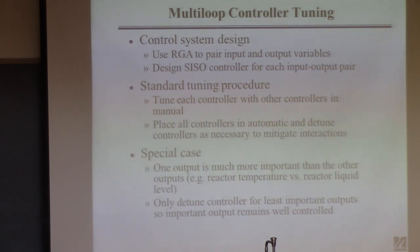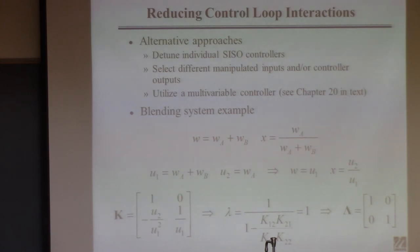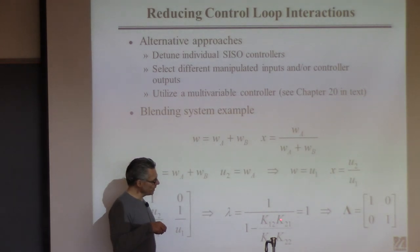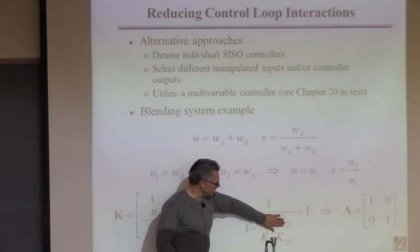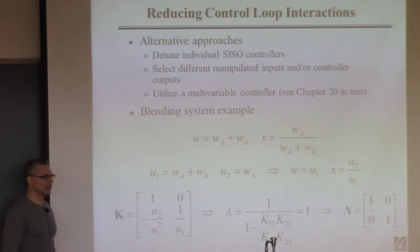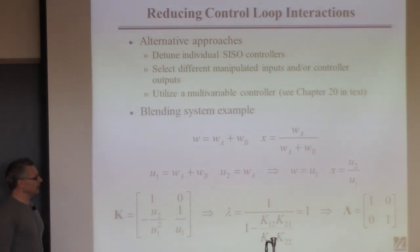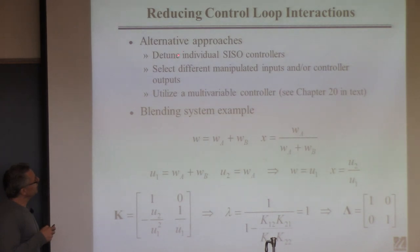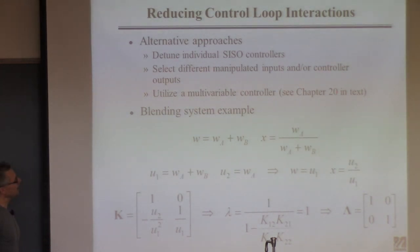Here's another special case: suppose you need to control reactor temperature and reactor level. These two things are going to interact — if you have more inventory in the reactor, more level, it's going to generate more heat and affect temperature. But the temperature is a lot more important than liquid level. So you design both controllers, turn them on, they interact, and then you just detune the liquid level controller. Don't sacrifice reactor temperature control because it's important — sacrifice liquid level control because it's not.